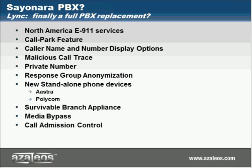The survival branch appliance allows users at a remote office to still maintain their phone calls and IM even if the WAN connection goes down back to their host system. It's a primary/backup registrar system that allows about 85% of the features, minus conferencing.